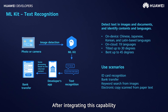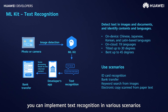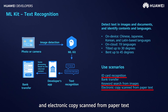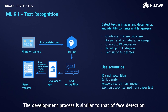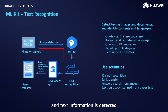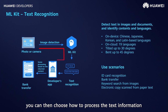After integrating this capability, you can implement text recognition in various scenarios. Typical applications include card recognition, keyword search from images, and electronic copy scanned from paper text. The development process is similar to that of face detection. After images or video streams are input into the ML SDK and the text information is detected, you can then choose how to process the text information.